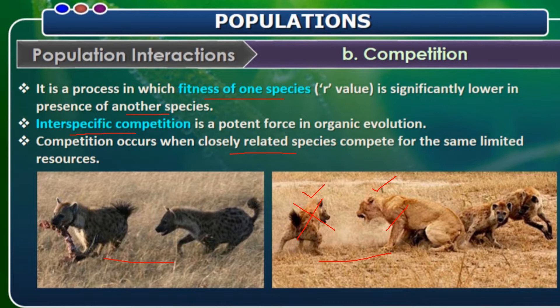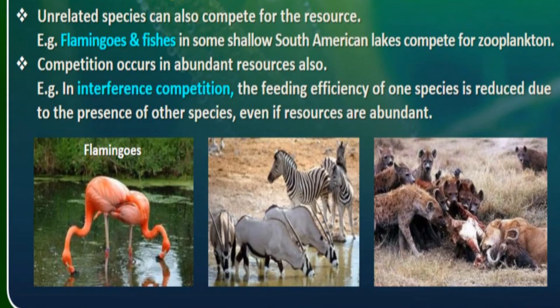They have to fight against each other for food and shelter. There is also competition between unrelated species. A big example of that is flamingos and fishes. In some shallow South American lakes, there is competition for zooplankton, and such type of competition is called interference competition.